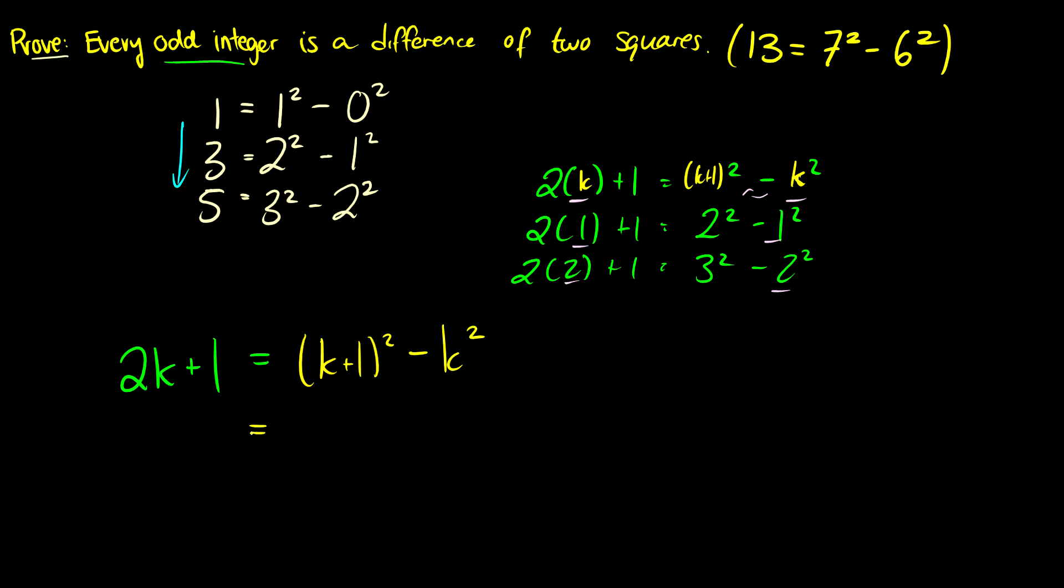Well k plus 1 squared is going to be k squared plus 2k plus 1 minus k squared. So this is going to equal 2k plus 1. So we've shown here that if we take the difference of two squares, k plus 1 squared minus k squared, we get 2k plus 1, which is an odd number.